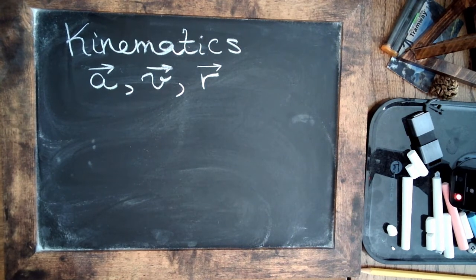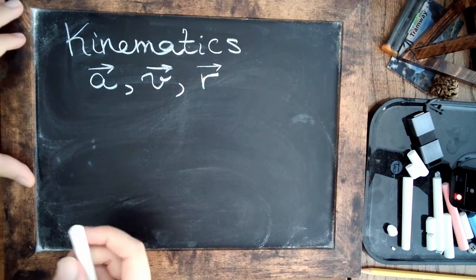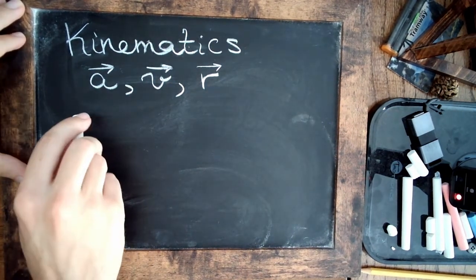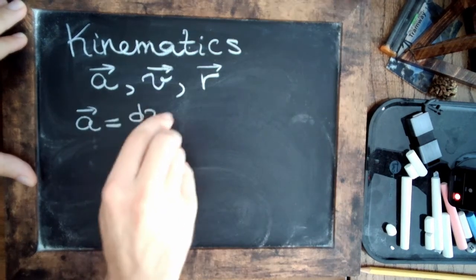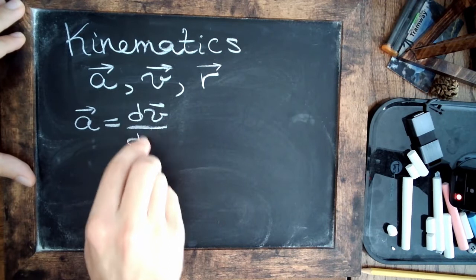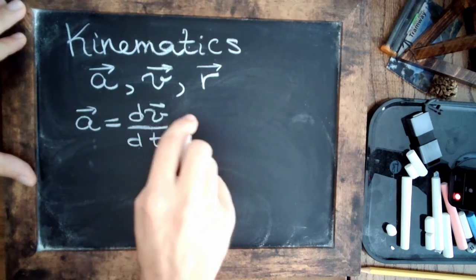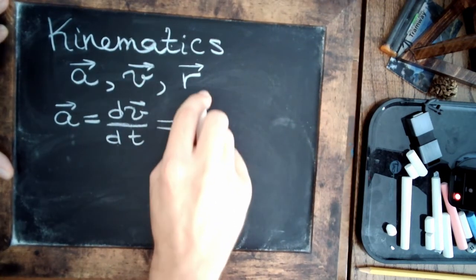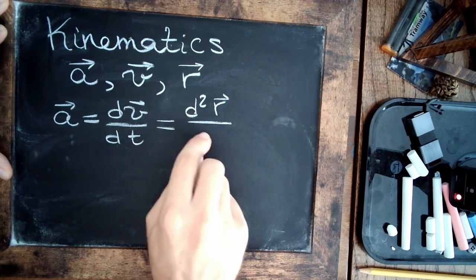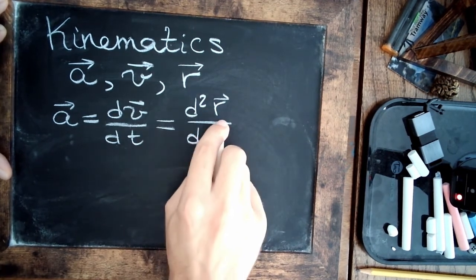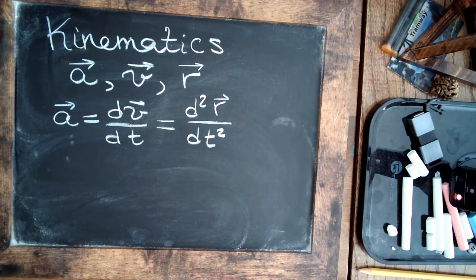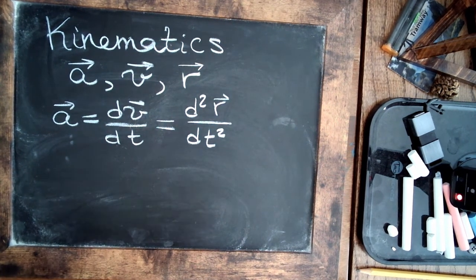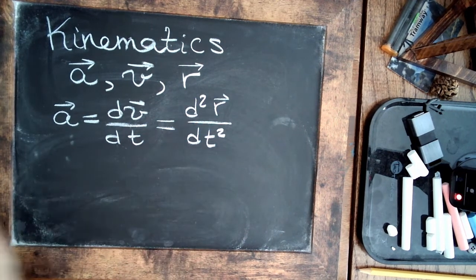So in general, these are all vector quantities, and then we relate all of them by derivatives. So we say that acceleration is the first derivative of velocity, which is in turn the first derivative of position. In other words, acceleration is the second derivative of position. So we just have that basic relationship, derivatives with respect to time to move between the quantities.